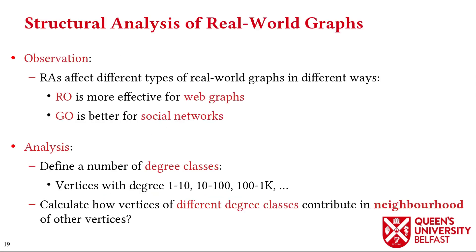We present a structural analysis of real-world graphs that explains how reordering algorithms affect these datasets in different ways. We observe that GOrder is more effective for social networks, while Rabbit Order is more effective for web graphs.